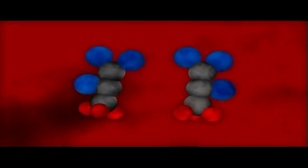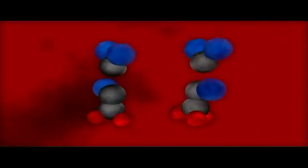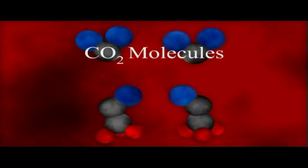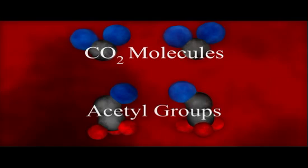Once within the matrix, each of the two pyruvic acid molecules is split into a CO2 molecule and a two-carbon molecule called an acetyl group.